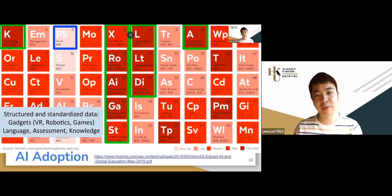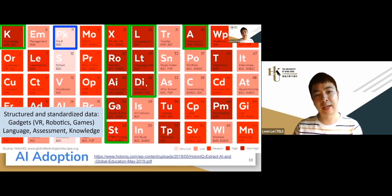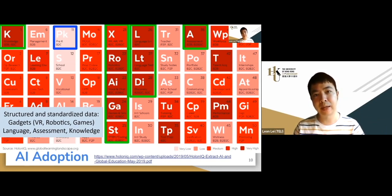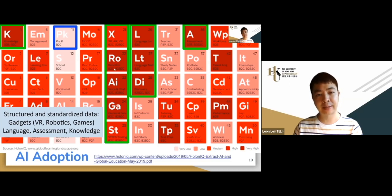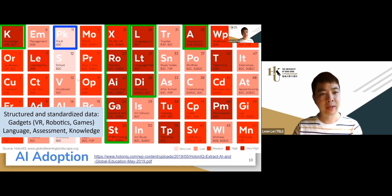Despite low pre-K adoption, some areas show wide adoption — for example, assessment and language learning. For English learning especially, AI-based adaptive systems are already large-scale applications, as you're talking about millions or even billions of learners. Language tests and related tools are well established. Robotics and games are also areas with existing data collection systems that make AI integration easier.